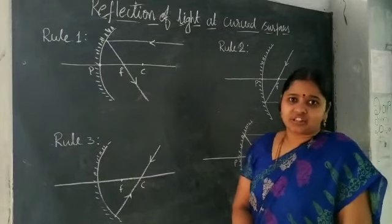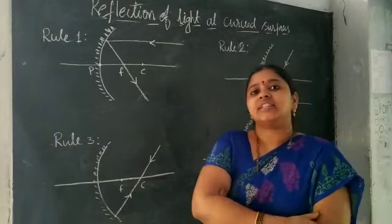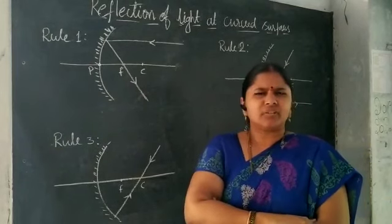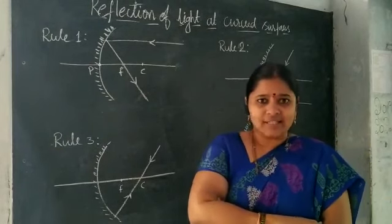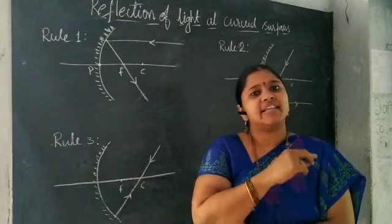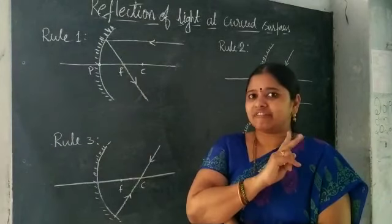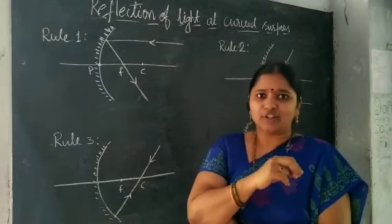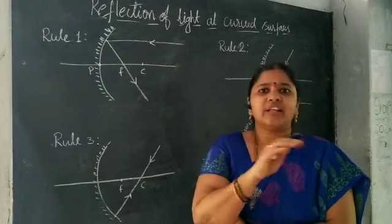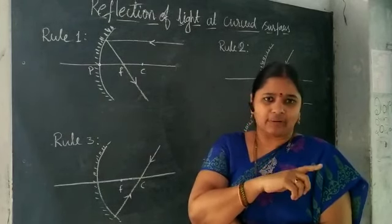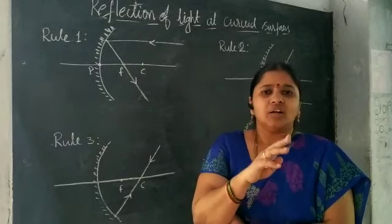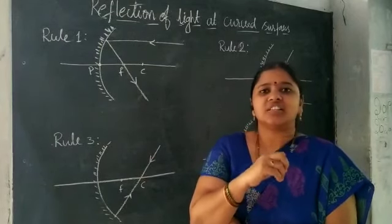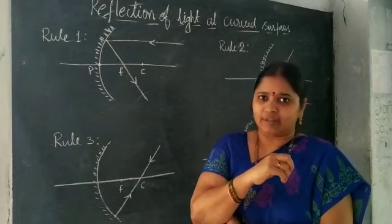The branch of physics which deals with light is known as optics. Optics is mainly divided into two parts: one is ray optics, and the second one is wave optics. Ray optics is a little bit easier to understand — that's why up to 10th class we have only ray optics. Wave optics is a little more complicated, so in our higher studies we learn about wave optics.